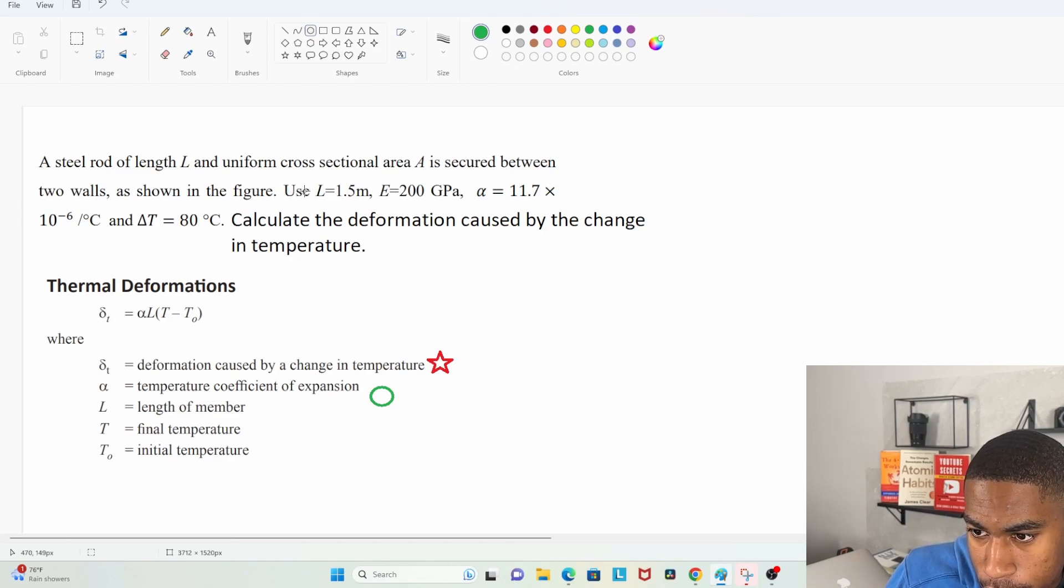The length of the member, length is equal to 1.5 meters, so I do have that. Final temperature, do I have that? Okay, final temperature, don't really know if I have final temperature, initial temperature, but I do have a change in temperature. So in my formula I know that T final minus T initial is change in T, so really I have that as well.